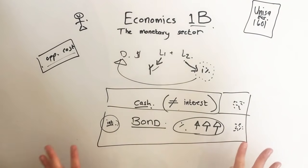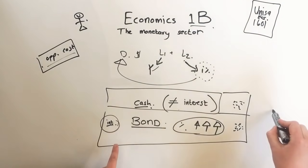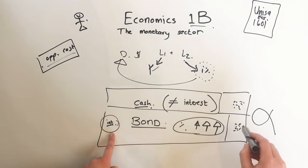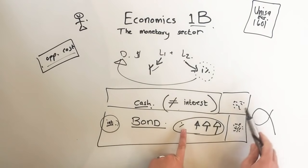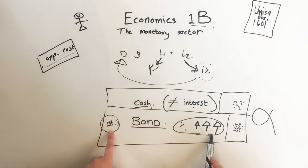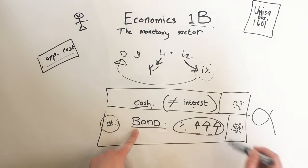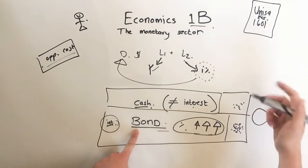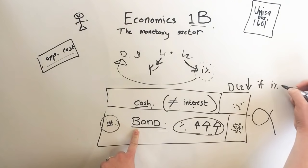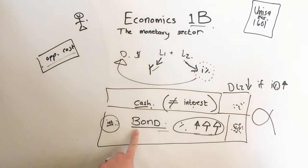All you need to know is there's an inverse relationship between the interest rate and the cash you're going to hold. If the interest rate goes up, you get more interest from the bond, which means you hold less cash, which means the demand for L2 goes down when the interest rate goes up. Good luck and cheers — here's to Economics 1B, let's do this.